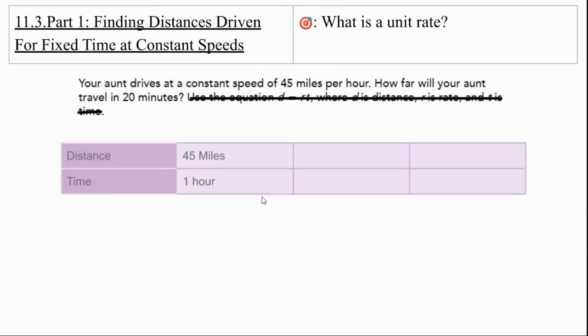We're going to go ahead and we're going to throw a table up in here. So our distance is 45 miles per hour, which means it's one hour. So another thing that we need to know is how many minutes that is. Because it says, how far will your aunt travel in 20 minutes? Well, one hour equals 60 minutes, which is still going to be 45 miles.